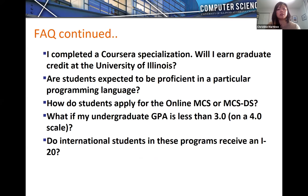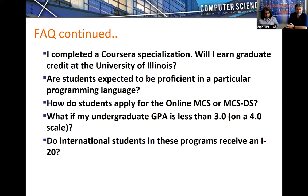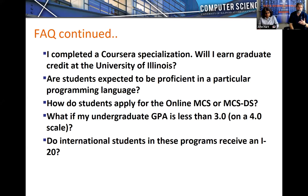A common question: I completed a Coursera specialization — will I earn graduate credit at the University of Illinois? No. You do get a certificate from the University of Illinois signifying you completed the specialization, but Coursera specializations are open to the general public and don't have the level of rigor — the machine problems, homeworks, class projects, and proctored examinations — needed to confer graduate credit. Those certificates are a great signal that you've been through the material, but they're different from transcripted university credit.